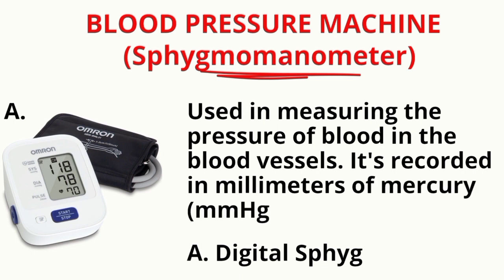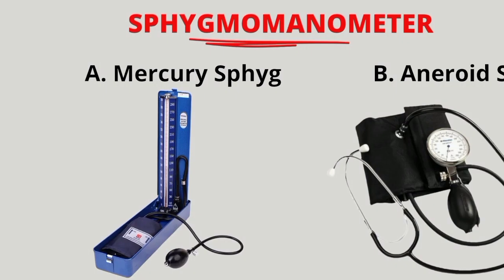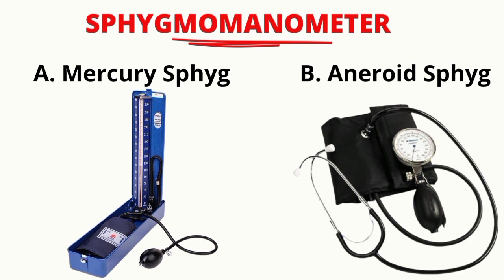The image here is a digital sphygmomanometer. It's automated and gives a pulse reading. These are the two types of manual sphygmomanometer: A is the mercury sphyg and B is the aneroid sphyg. A stethoscope is needed to listen for a reading.